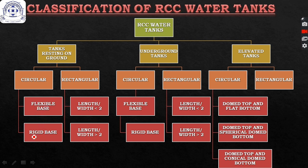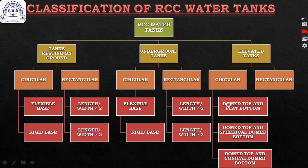Circular tanks for resting on ground and underground can be of two types: with flexible base and with rigid base. Rectangular tanks can be of two types depending on the ratio of length to width — if less than two or greater than two, the design approach differs. Elevated tanks, which are commonly circular, can have a domed top with flat bottom, domed top with spherical domed bottom, or domed top with conical domed bottom.